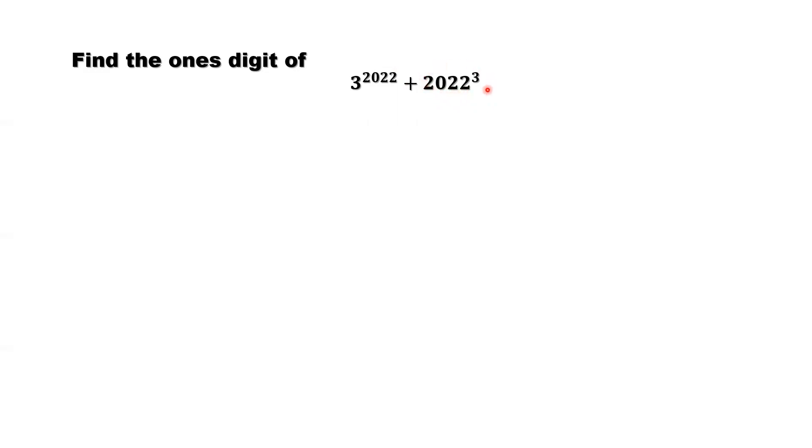The second part is easy because to find the last digit, the one's digit for this number, it's equivalent to find the one's digit of 2 to the power 3. What is the last digit for this one? 2 to the power 3 is 8. So we know this is 8. But how to find this one?